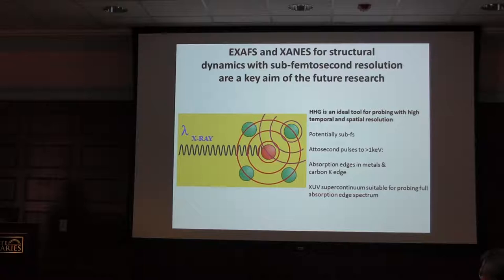If we can do such things with HHG tools, then potentially we can get sub-femtosecond time resolution for these structural measurements. We know that attosecond pulses beyond a keV have been generated. We know also that the pulses are relatively weak, but certainly at a few hundred eV limit, we think we can have enough photons to do such measurements. The absorption edges in metals and the carbon K edge are in that sort of lower photon energy range, 280 eV down.